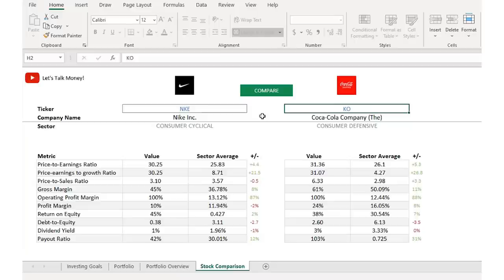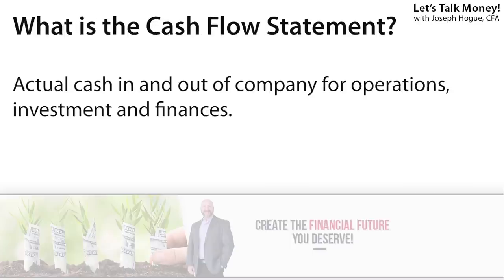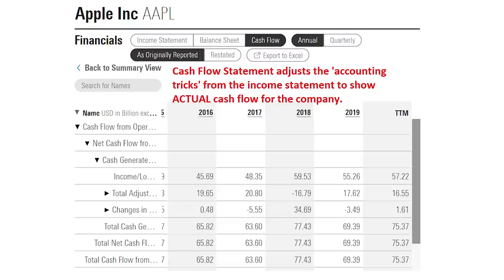The debt-to-equity is another one I made sure to include in the stock comparison spreadsheet so you can easily compare it against other companies or the sector itself. I saved this last ratio for the end because it's harder to calculate and definitely more technical, but for anyone with the dedication to stick around, this is one of the best ratios to analyze a stock. Here I'm talking about growth in cash flow from operations compared to net income growth. The statement of cash flows is a real picture of cash in and out of the company. There are still ways for management to fudge these numbers but it is so much harder to manipulate this statement compared to the income statement. That first section — the cash flow from operations — shows you the actual cash-generating power of this business.